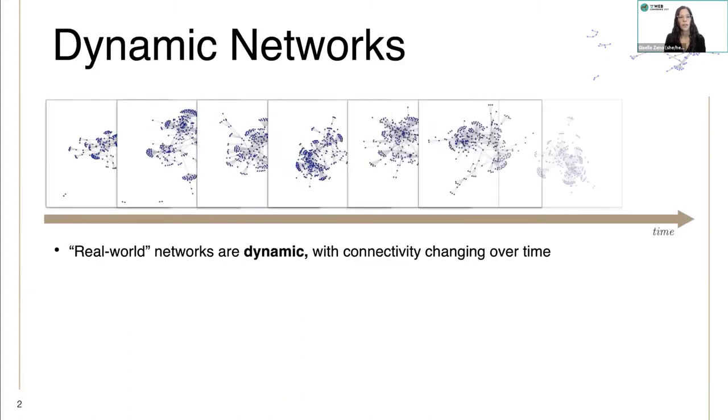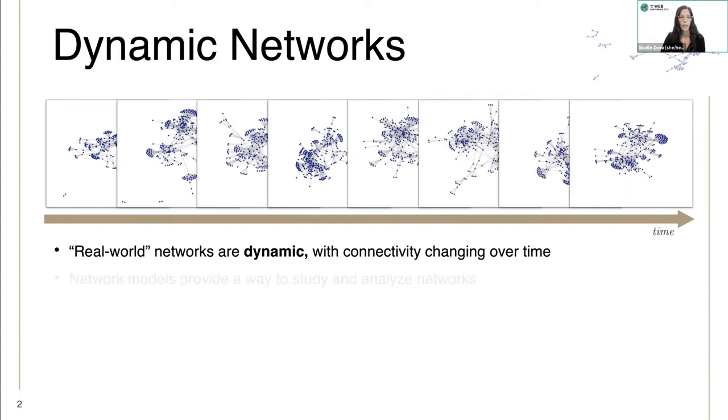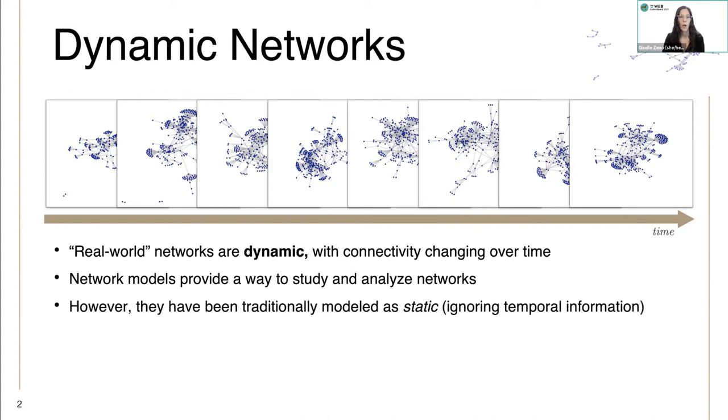Real-world networks are dynamic with connectivity changing over time, and network models provide us a way to study and analyze these networks. However, they have been traditionally modeled as static, ignoring temporal information.